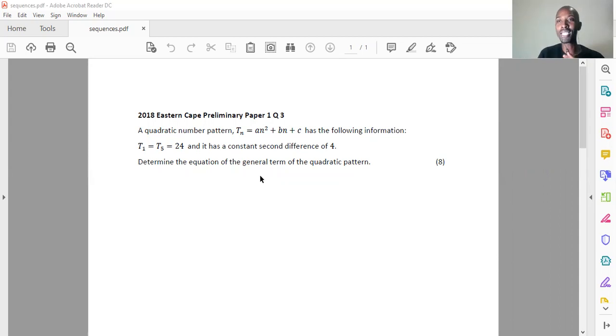So to begin with, we need to understand something significant. When you're dealing with quadratic sequencing, notice that the second difference is always the same, and we're told that the second difference is equal to 4. Number two, the first difference of a quadratic sequencing is actually an arithmetic sequencing. So when you're looking for the general term of this particular quadratic pattern, there's a couple of things that you need to do.